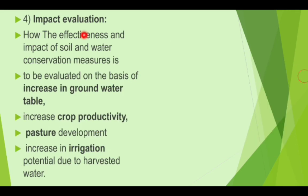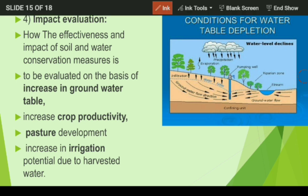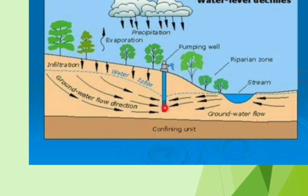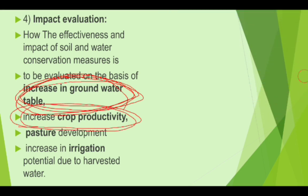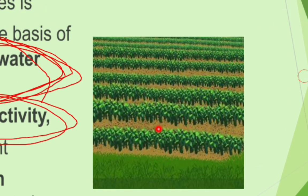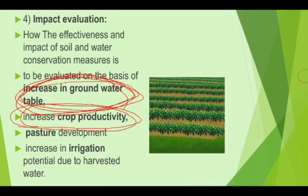Number four in evaluation is impact evaluation. The effectiveness and impact of soil and water conservation measures is evaluated on the basis of increase in groundwater table. If the groundwater level has been increased, that may be correlated as a result of our development activity. The second criterion is whether crop productivity has been increased — if it is increased, we can say we have a positive impact; if decreased, the work has not had a positive impact.